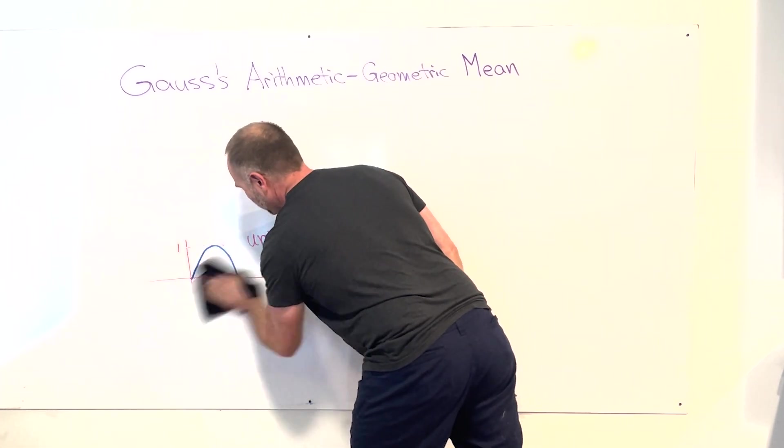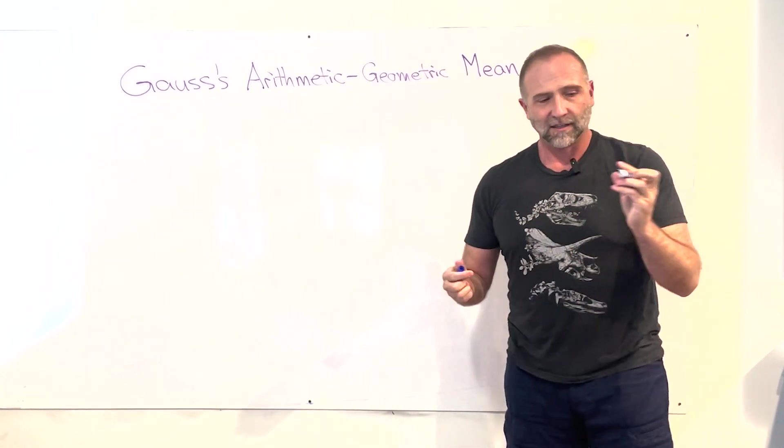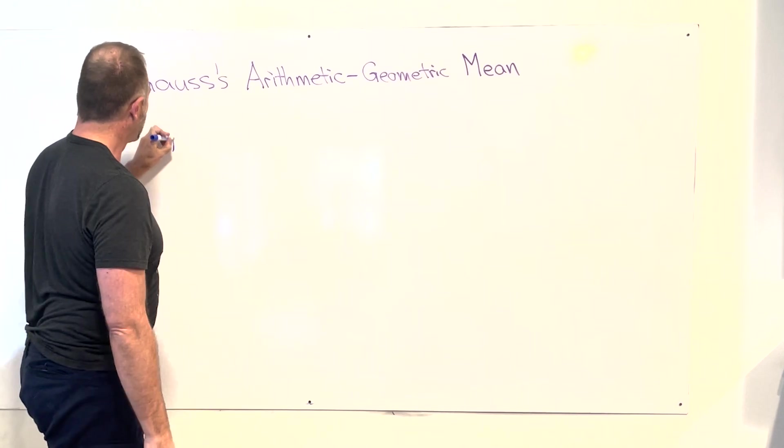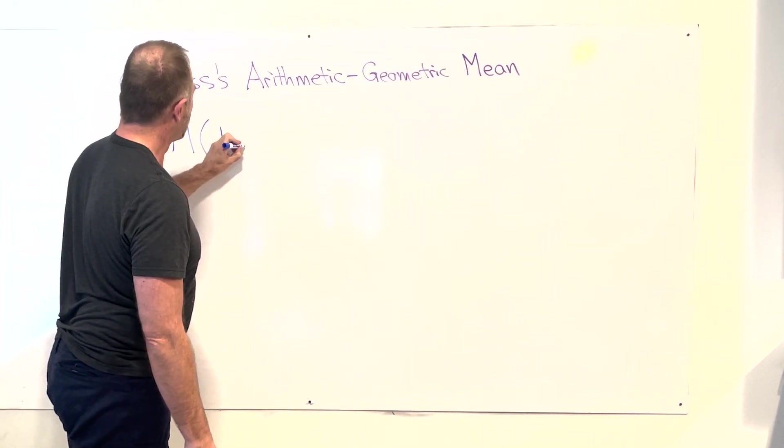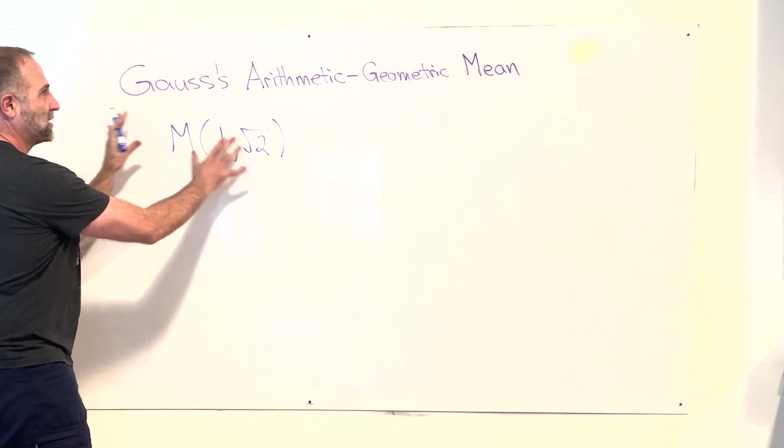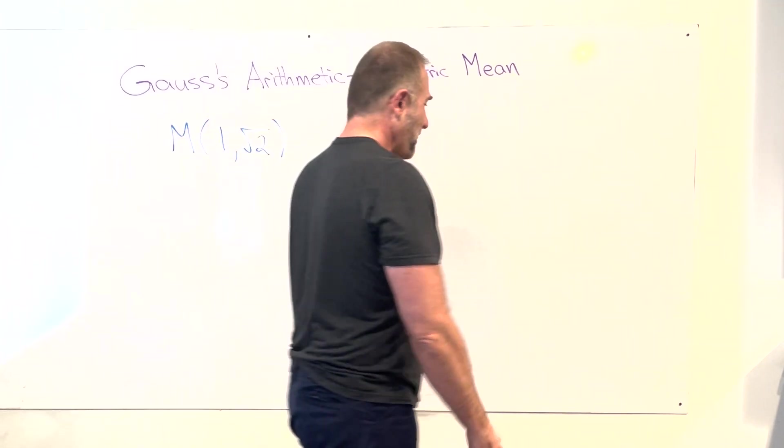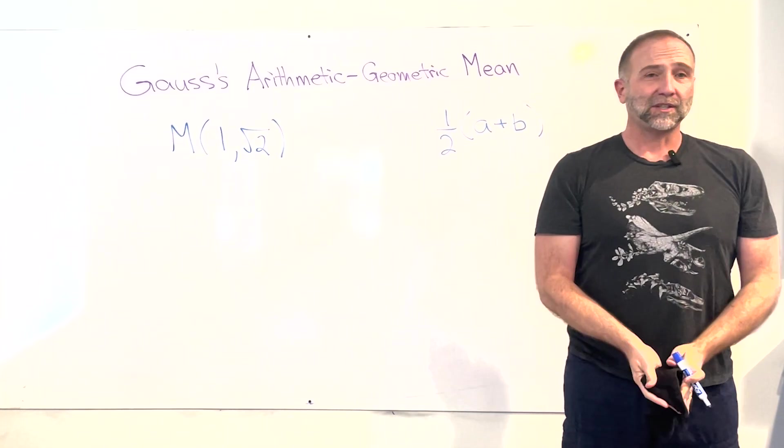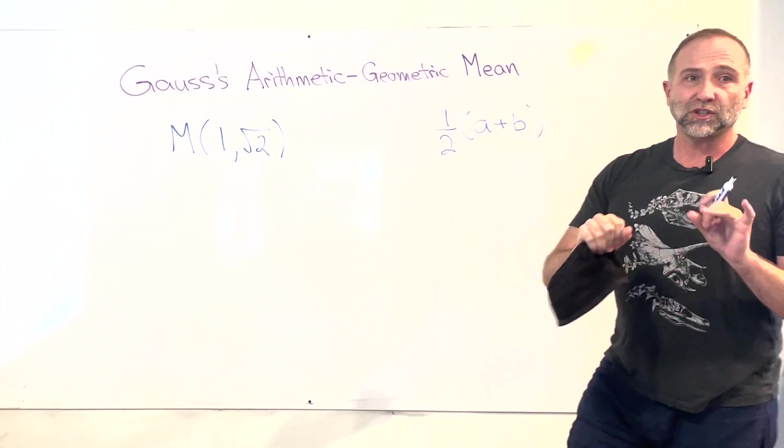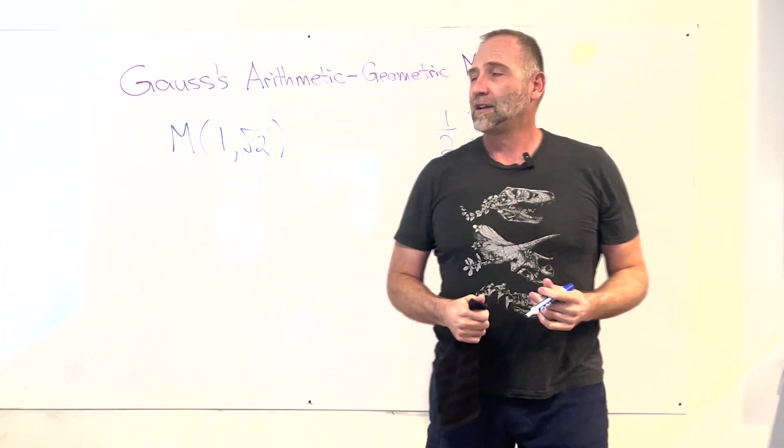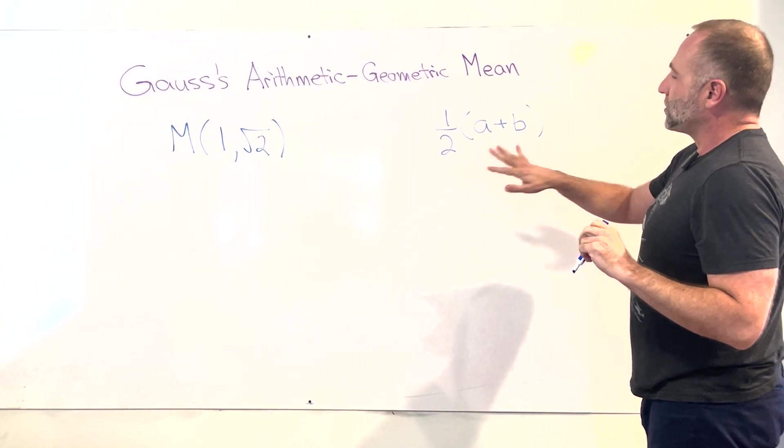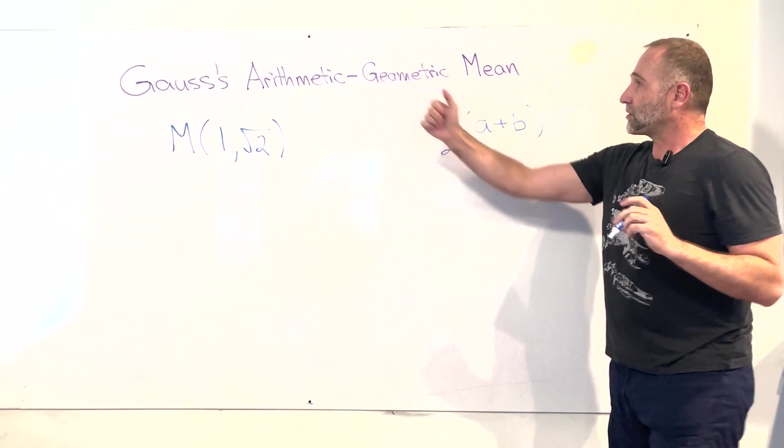By Gauss when he was 22 years old, 1799. He didn't even publish this. We found out afterwards in his personal notes. He came up with the concept of this arithmetic geometric mean. But I'm going to define it very slowly, so it becomes an object in your head. The arithmetic mean is a rule. Take one-half a plus b. Just the rule of taking two things, dividing by two, because you took two things.